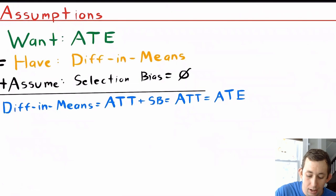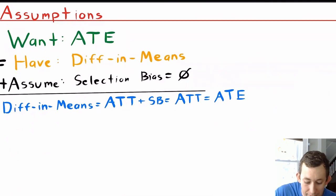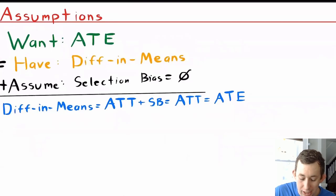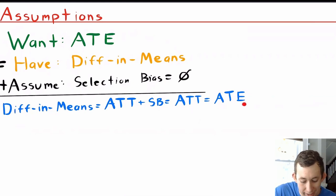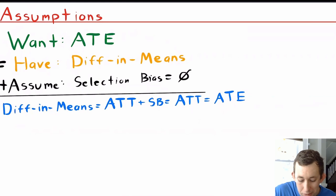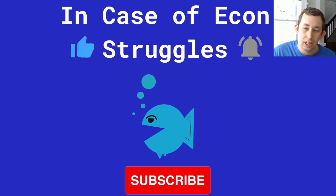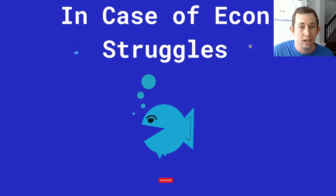What we want to do with these causal methods is reduce selection bias. If selection bias were zero, then the difference in means would be the actual average treatment effect, because Bill and Helena would be exactly the same as Stephen except for owning cats — so the only difference in stress levels would be attributed to cat ownership. I want to know the true average treatment effect; I have the information to calculate a difference in means. If I assume selection bias is zero, the ATT also equals the ATE. So these causal methods are all about ensuring selection bias is zero so we can do ATE estimation using our difference in means, making the treatment and control groups comparable. If this was helpful, make sure to like and subscribe, and comment below if you still have questions. We'll see you next time.